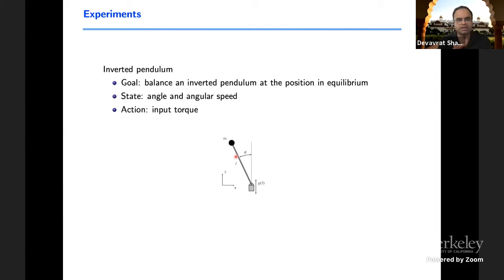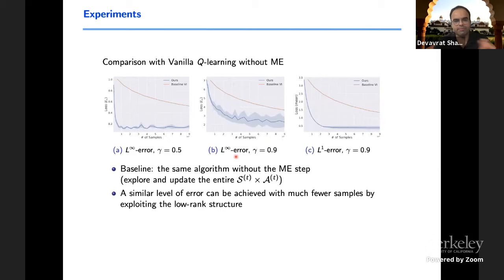One interesting question that remains open is: we have shown the existence of such a thing for potentially not optimized constants. Question is, what are the optimal constants you can achieve for such a matrix estimation requirement? That remains an interesting question. It's a kind of nice tie up between the reinforcement learning method and the matrix estimation literature. In one minute, I'll quickly show how it works in some of the simple experiments.